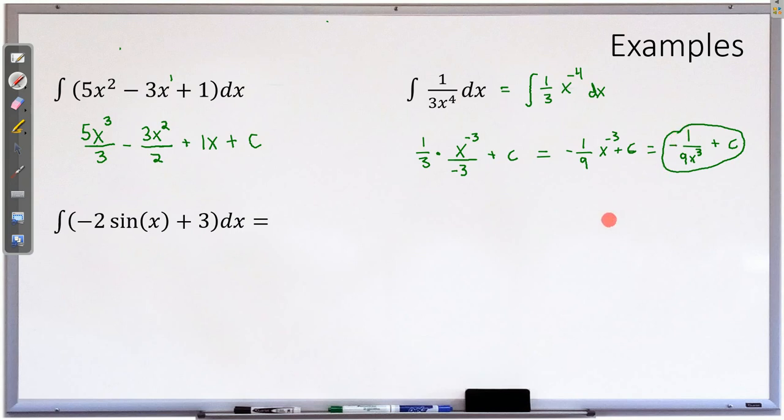And it might look nicer if we put that back in the denominator, so negative 1 over 9x³ like that. Looks a little nicer that way. But again, the calculus was right here, everything else was algebra.